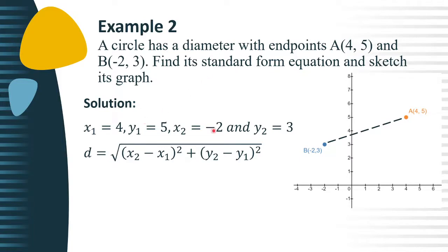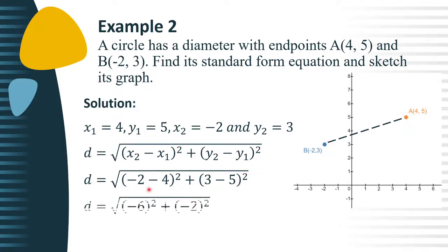We substitute negative 2 for x sub 2, 4 for x sub 1, then 3 for y sub 2, and 5 for y sub 1. Simplifying the equation, we have negative 2 minus 4, that is negative 6. 3 minus 5 equals negative 2. Then, negative 6 squared is positive 36, and negative 2 squared is positive 4.